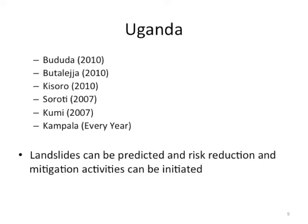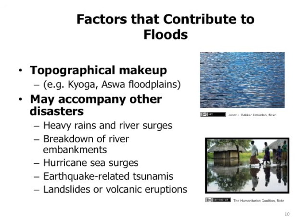Landslides can be predicted and risk reduction and mitigation activities can be initiated. Factors that contribute to floods include the topographical makeup of the area, and they may accompany other disasters like heavy rains and river surges, breakdown of river embankments, hurricane sea surges, earthquake-related tsunamis, and landslides or volcanic eruptions.